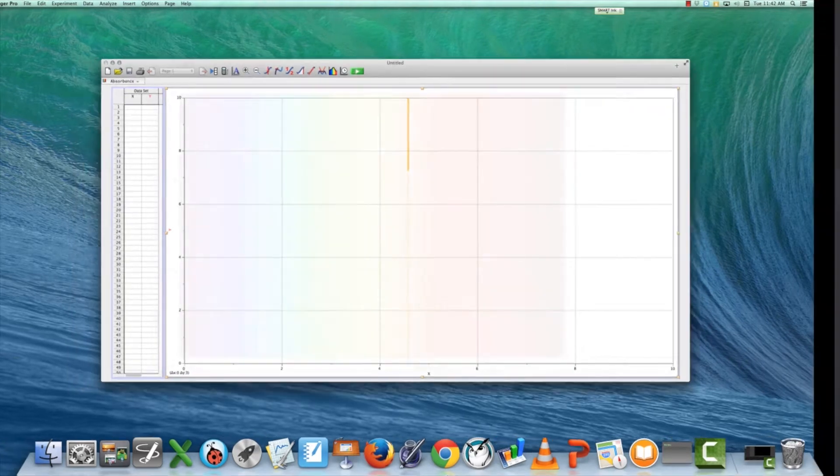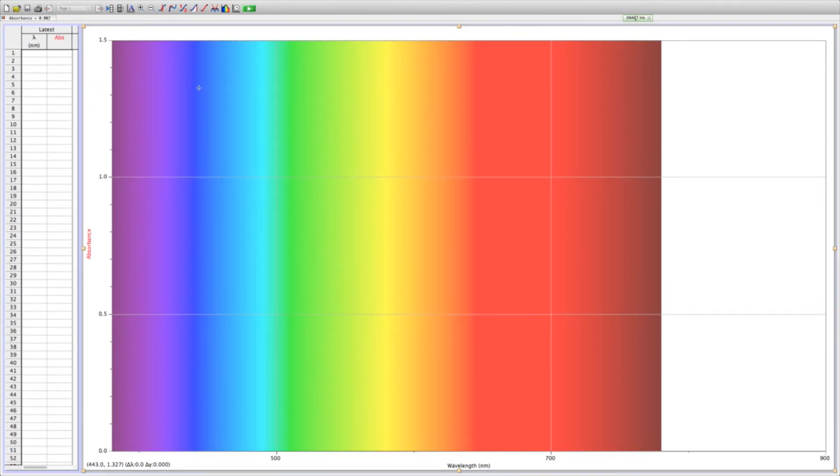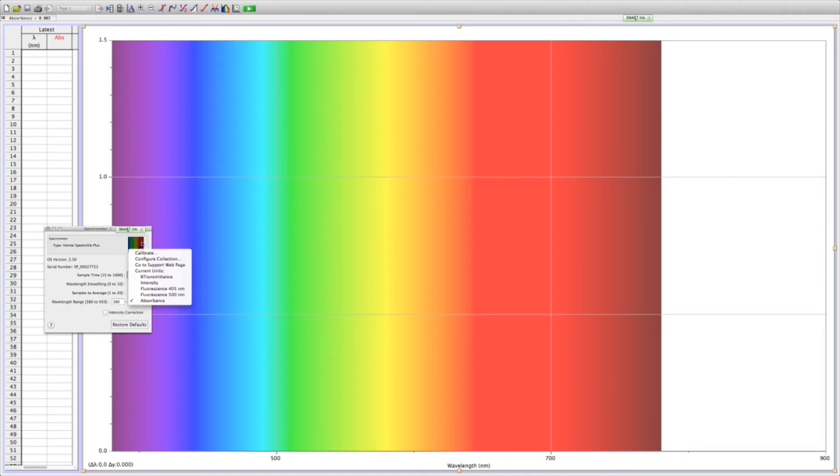In the upper left-hand corner of the screen, you will find the word absorbance with a picture of a rainbow in a box. A text box will pop up with another rainbow box. Click on it. On the drop-down menu, click Calibrate.